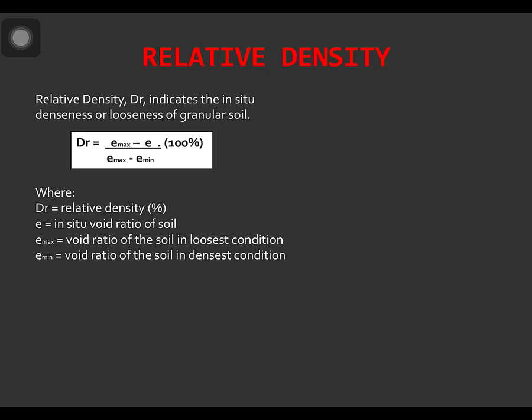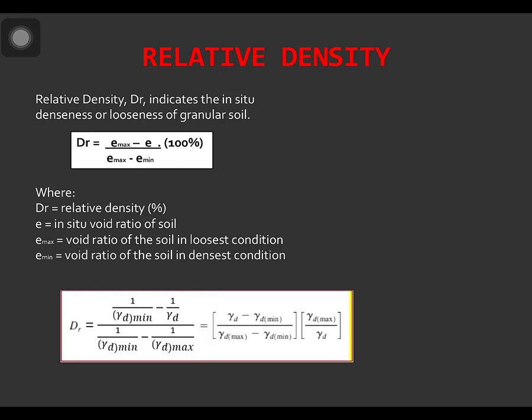we can also express relative density in terms of maximum and minimum possible dry unit weights. Where gamma dry min is the dry unit weight in the loosest condition at a void ratio of emax, gamma dry is the in-situ dry unit weight at a void ratio of e, and gamma dry max is the dry unit weight in the densest condition at a void ratio of emin.